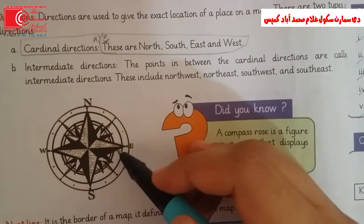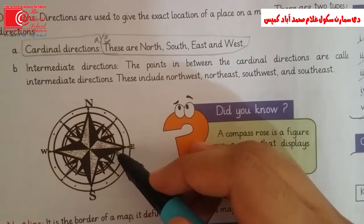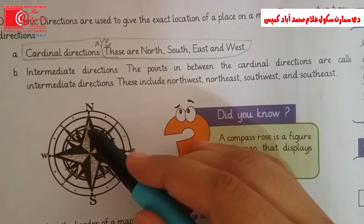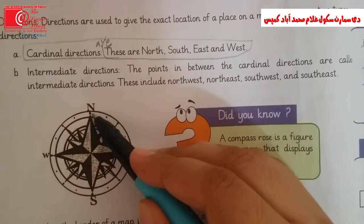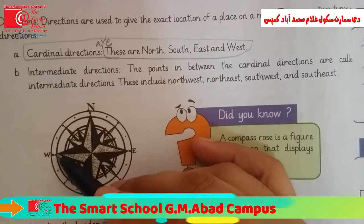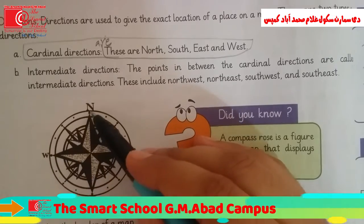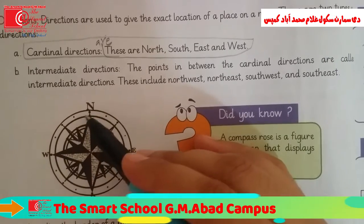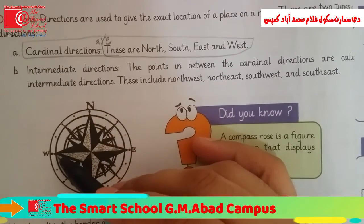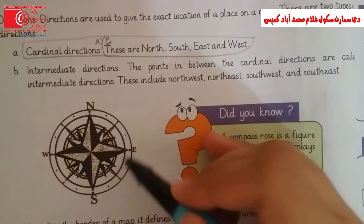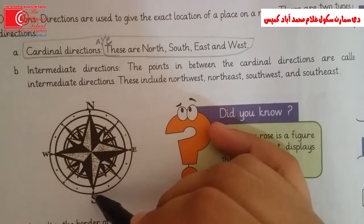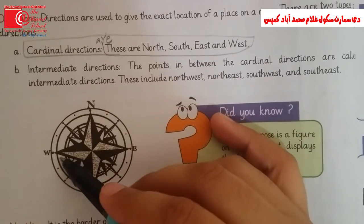See students, these directions are shown here. These are the cardinal directions. The intermediate directions are North-West, South-East, and South-West.